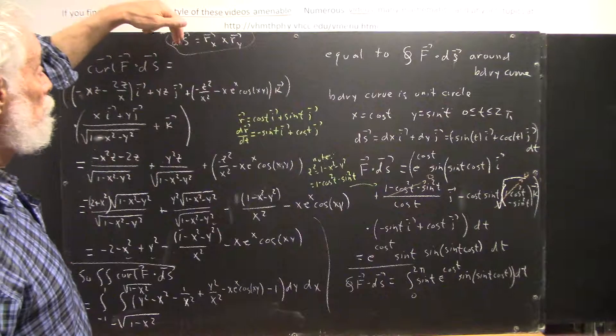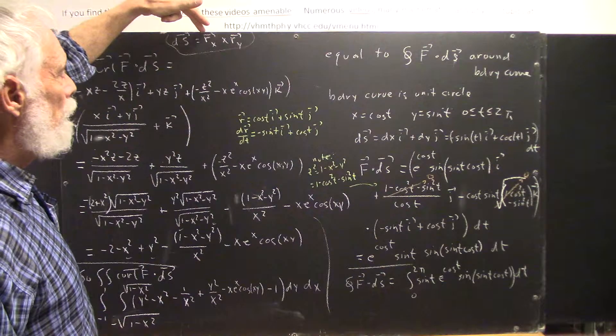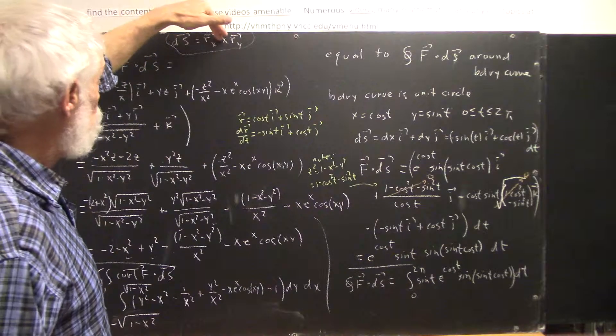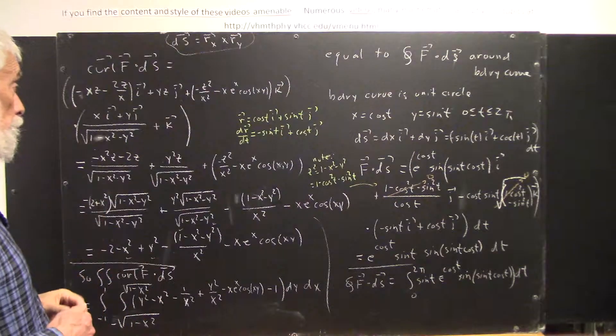our surface area increment multiplied by the normal vector. If we've calculated this as rx cross ry, then we can simply use it to calculate the curl of f dot ds, and that's what we're going to actually do.